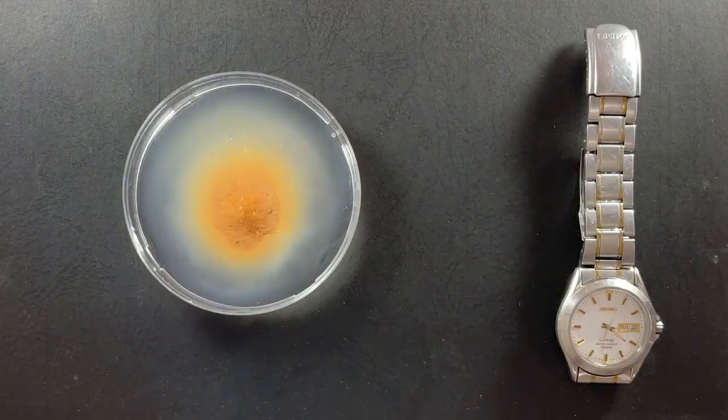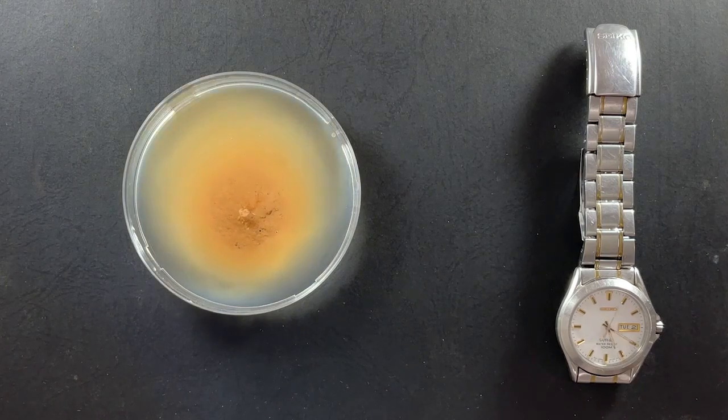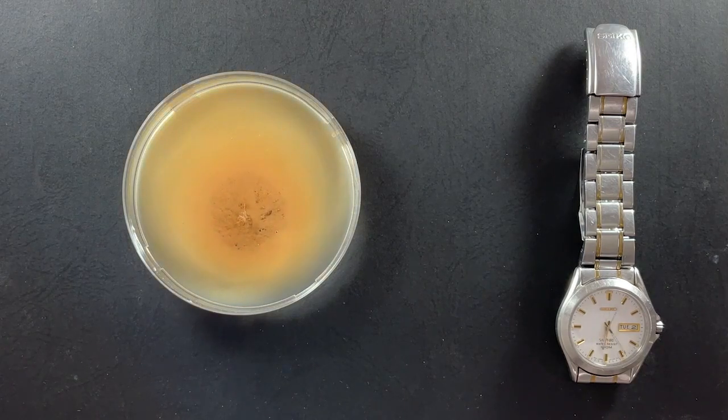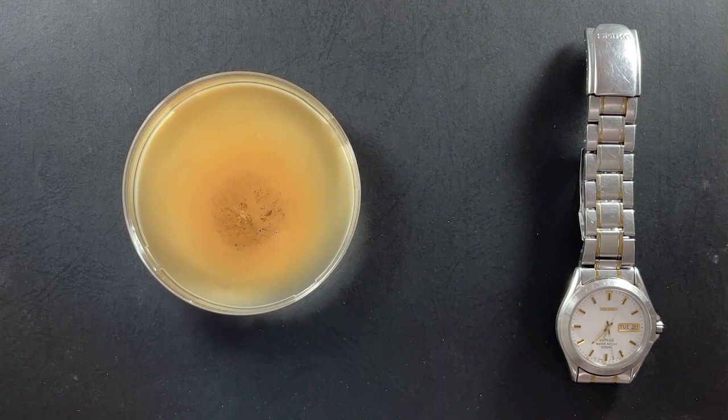Sodic clay soil disperses when it becomes wet. This dispersion can be seen when crumbs of sodic clay soil are put into a petri dish of water.